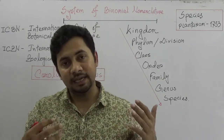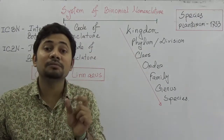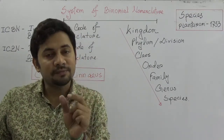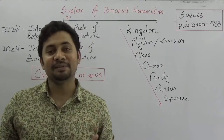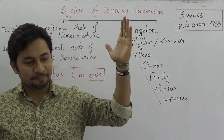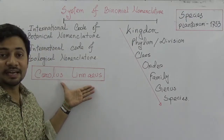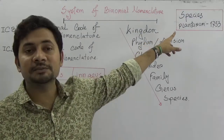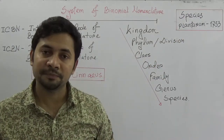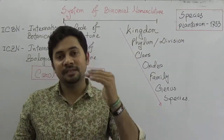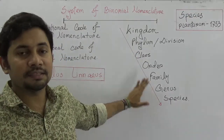On this planet we have millions of species around us, and each and every single species has their own identified unified coding name. This was established by Carlos Linnaeus and his book 'Species Plantarum', which was published in 1753. He is the pioneer of classification.